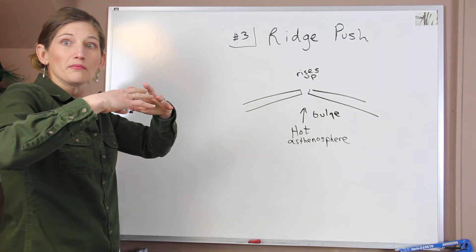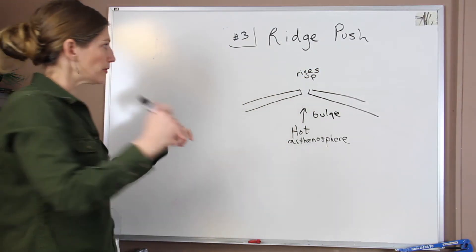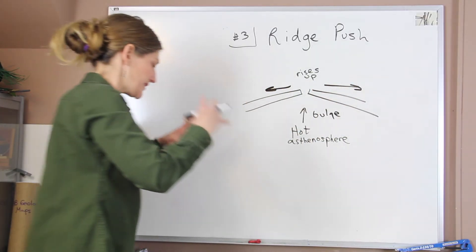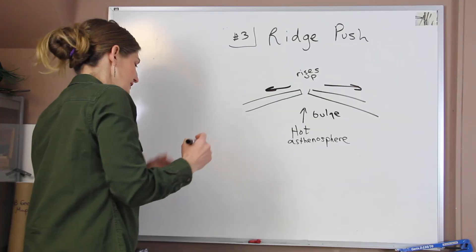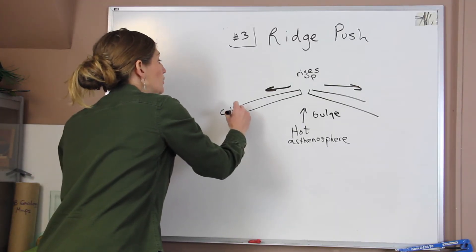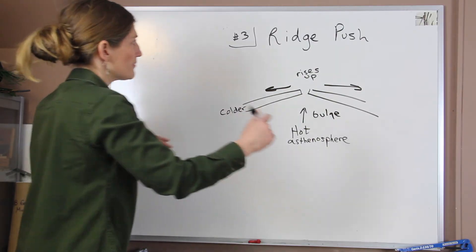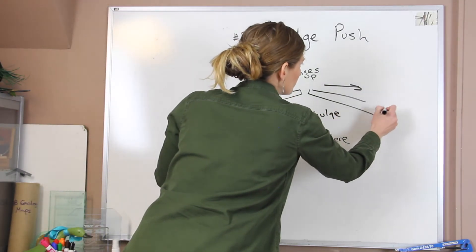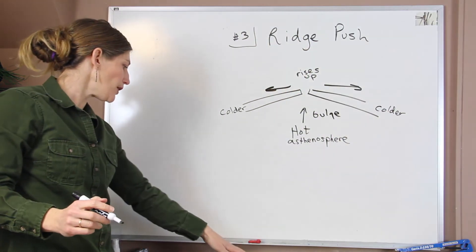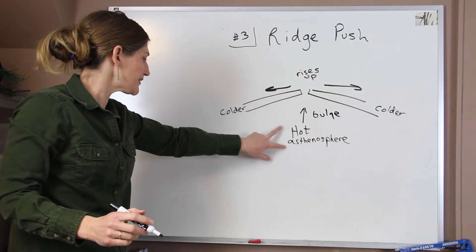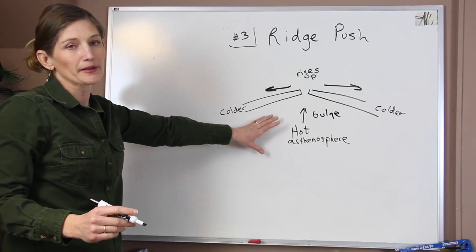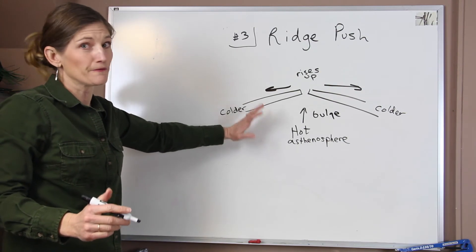And then it's less dense and it pushes outwards. And then it starts to push the plates as it goes, this mound of material. Gravity starts to pull it down. And it pushes the colder, cooler lithospheric plates away from this rise. So this is driven by that hot asthenosphere down below. So this can really help us explain why our continental lithosphere first broke up.